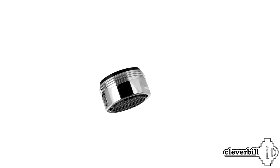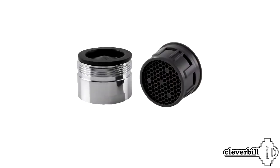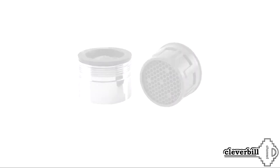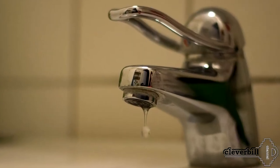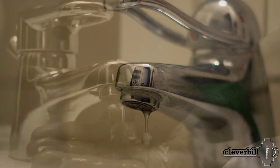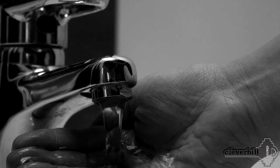The aerator consists of a body and several grids with holes of different diameters. Many people know that the aerator is capable of clogging and needs to be cleaned or replaced from time to time.